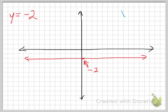What about vertical lines? What if we look at x equals negative 2? Well, now x is stuck at negative 2, and so I get the vertical line at x equals negative 2.